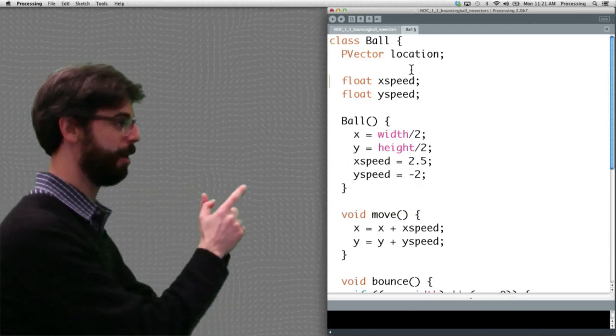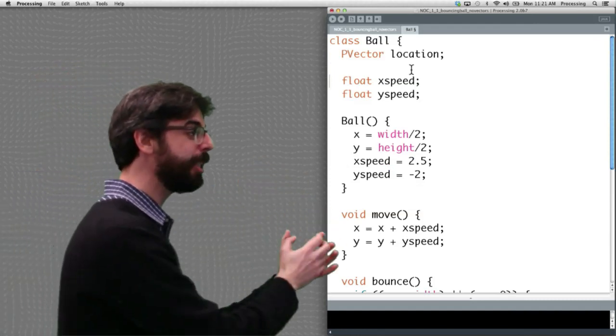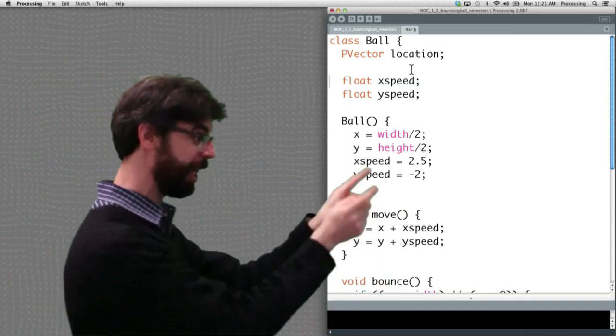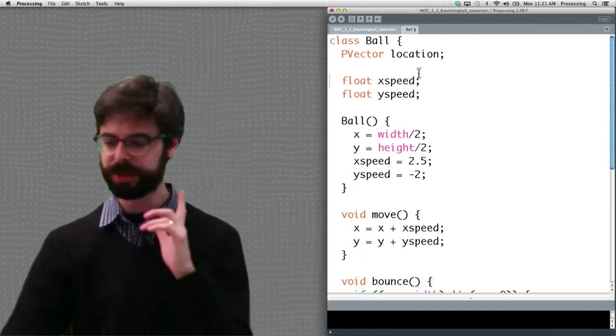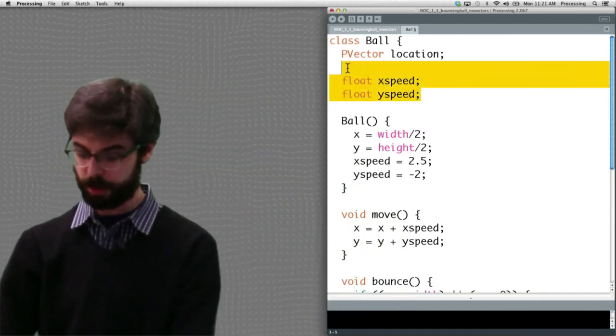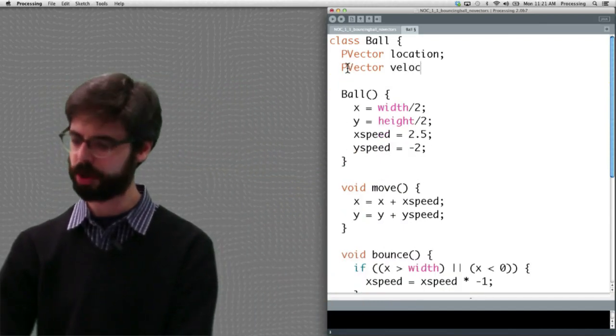Now we have another pair of x's and y's, xSpeed, ySpeed. We know in the move function xSpeed changes x, ySpeed changes y. We're going to do the same thing, but with vectors. So instead of an xSpeed and a ySpeed, we're going to say PVector, and I'm going to call this velocity.